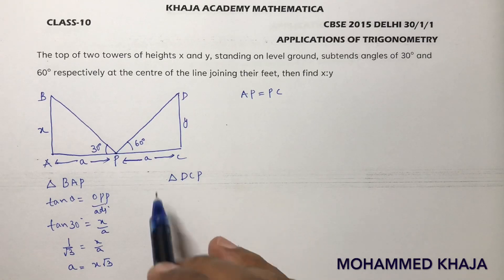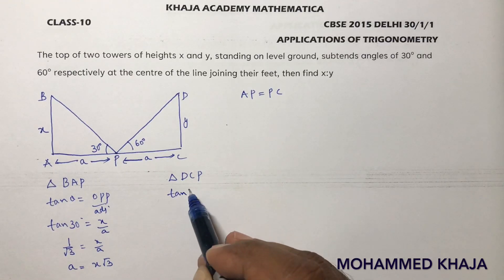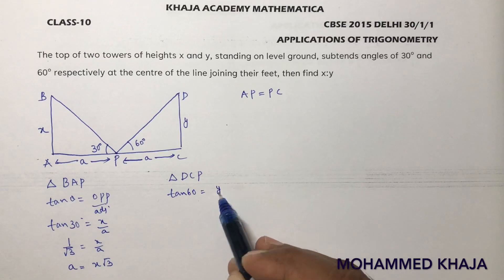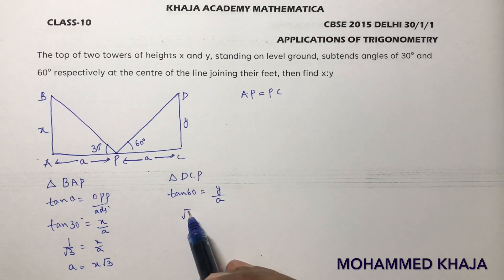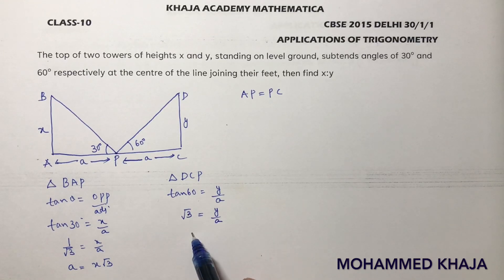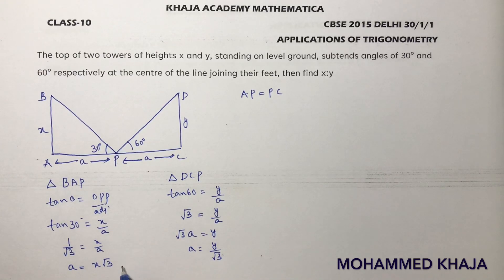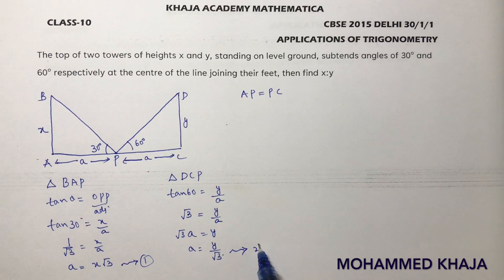Now take triangle DCP. Tan 60 equals y over A. Since tan 60 is root 3, we get root 3 equals y over A. Cross multiplying gives root 3 times A equals y, so A equals y over root 3. This is equation 2.